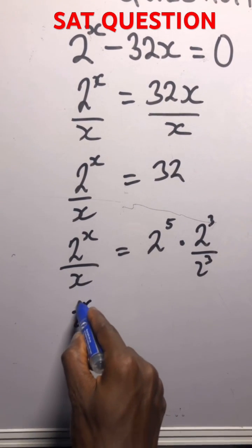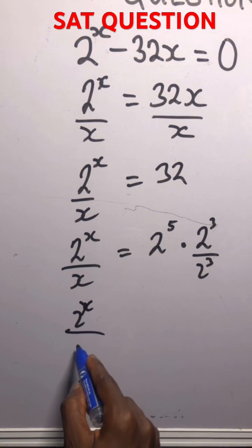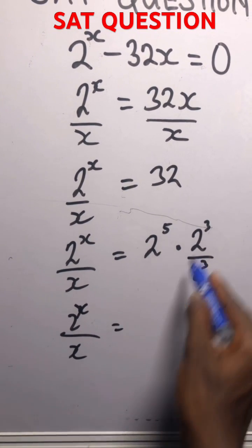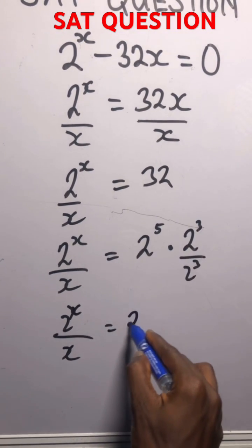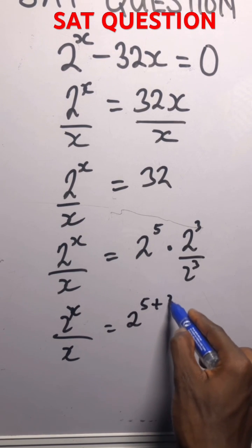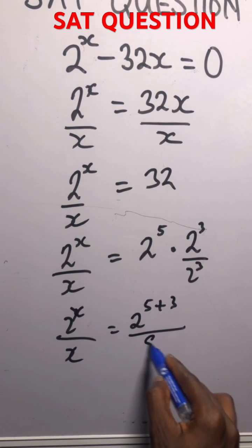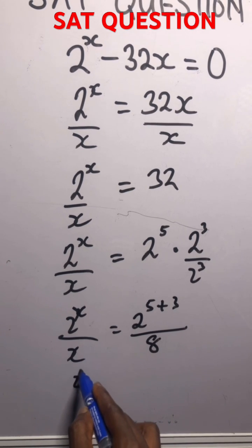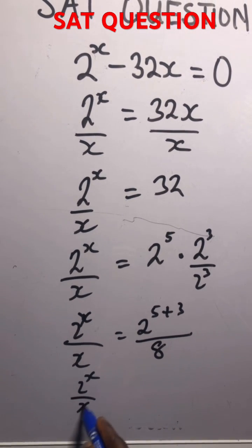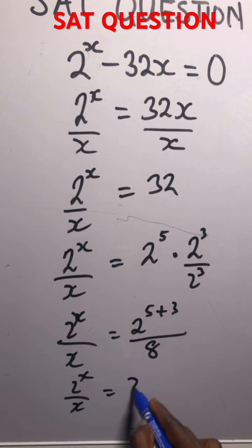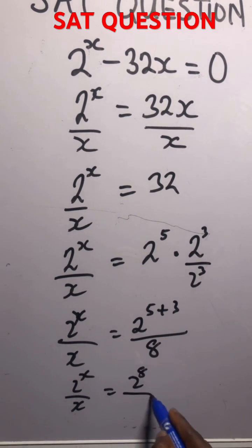2 to the power of x over x equals, so out of this guys, you got 2 to the power of 5 plus 3. Over 2 to the power of 3 is absolutely 8. And then you have 2 to the power of 8, and then you have 2 to the power of x over x equals 2 to the power of 8 over 8.